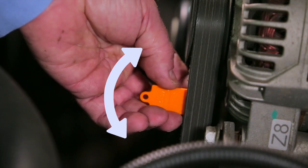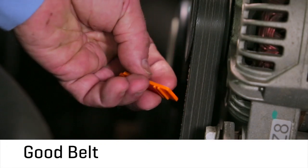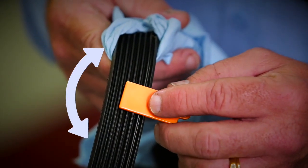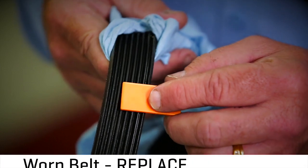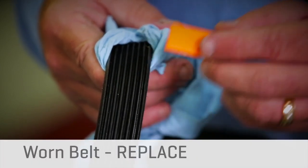When the gauge remains tightly seated and resists movement, the belt has sufficient service life left. When the gauge allows lateral rocking movement, the belt ribs have enough wear to allow the belt to slip and should be replaced.